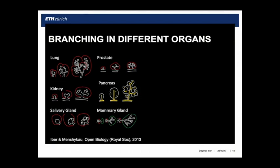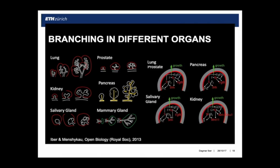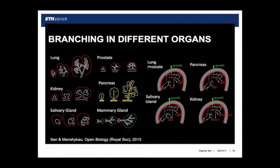Branching occurs in many different organs, and intriguingly all of them are based on FGF10 and Sonic hedgehog signaling. The same mechanism and principle could guide branching in absolutely all organs except the kidney. In the kidney, branching morphogenesis is based on two proteins, GDNF and WNT11, especially GDNF. GDNF is a very different protein family — a BMP signal — so evolutionarily speaking it is completely different.